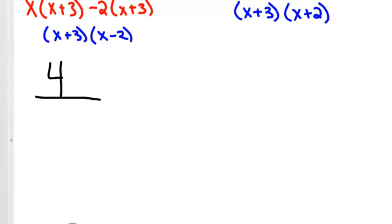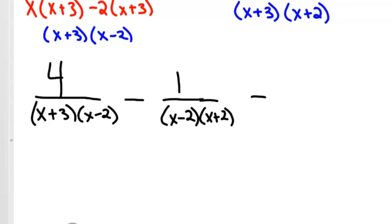Now we should have 4 over x plus 3x minus 2 minus 1 over x minus 2x plus 2, or x plus 2x minus 2, equals 2 over x plus 3x plus 2.